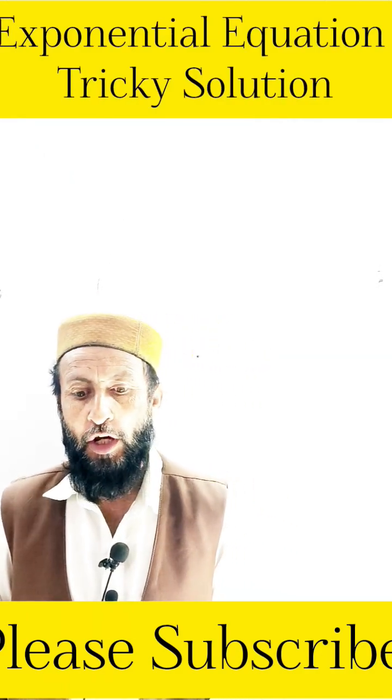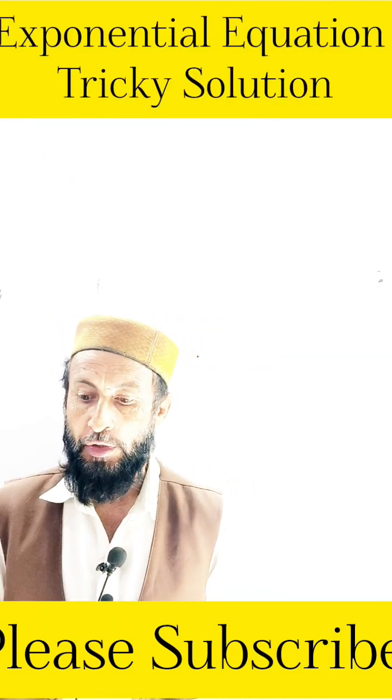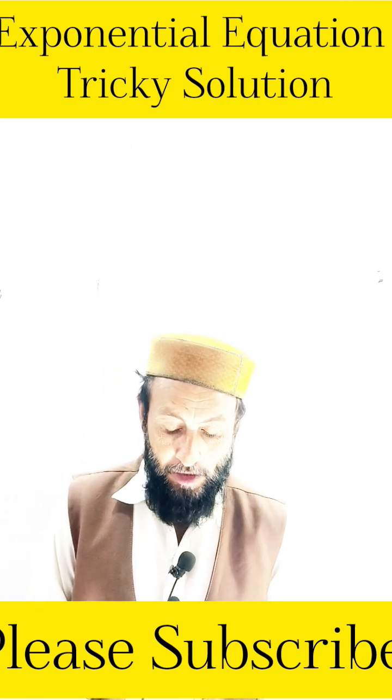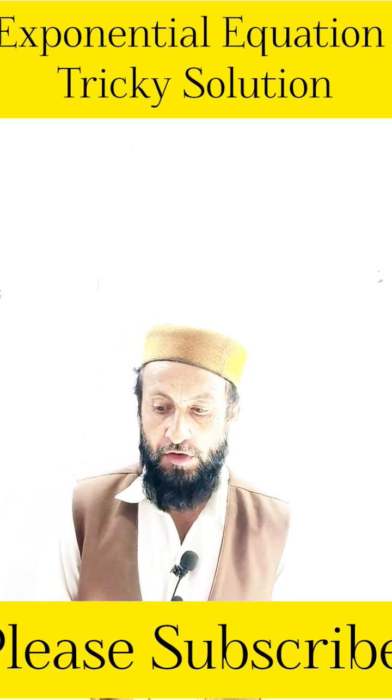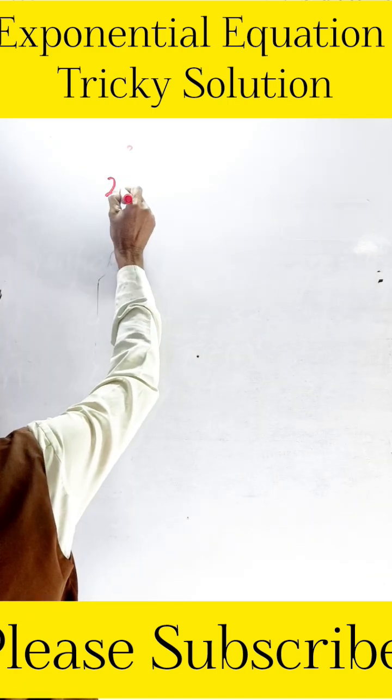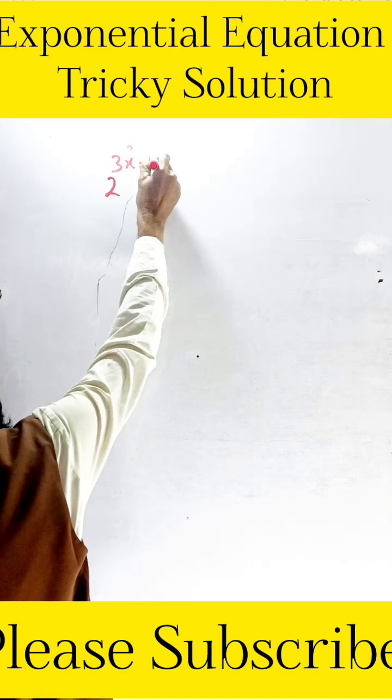Hello everybody, in my channel today we have a new exponential equation, very tricky question when the bases are different. So in power are also different. How we calculate this result? 2 exponent of 3x minus 15...